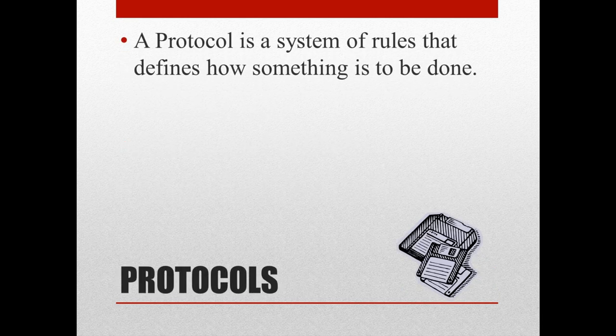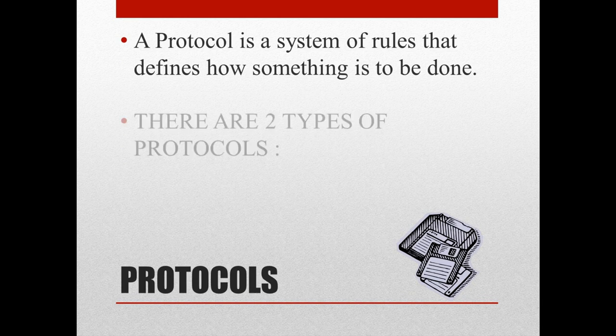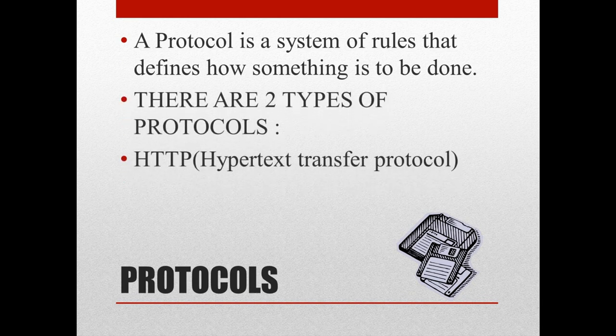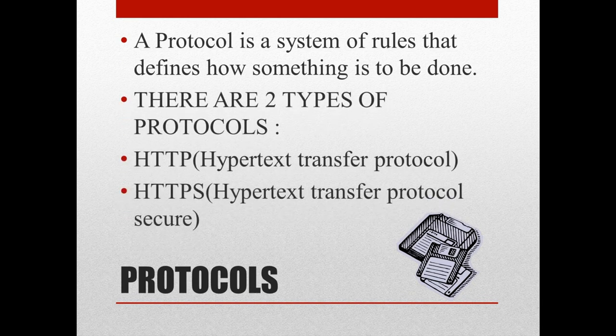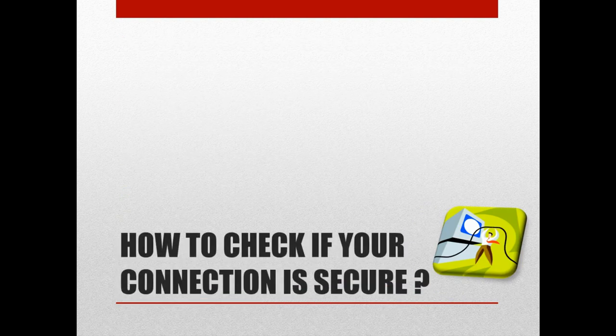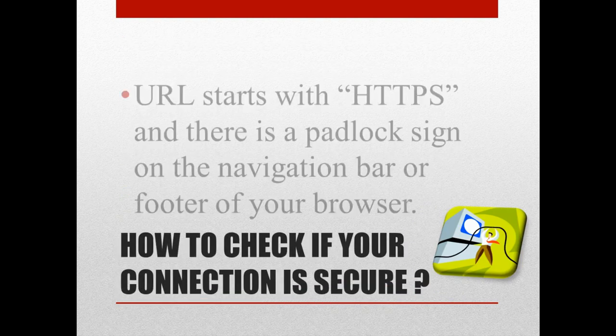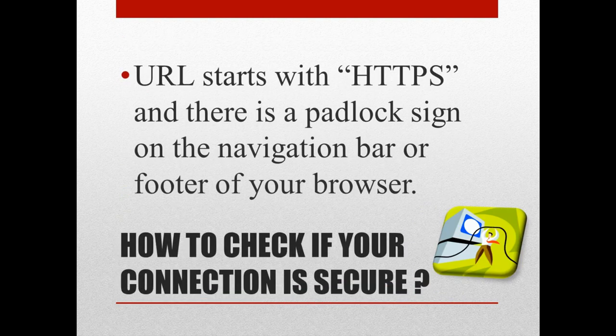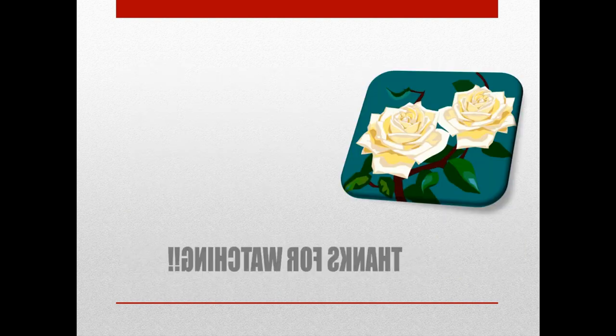Protocols — a protocol is a system of rules that defines how something is to be done. There are two types of protocols: HTTP and HTTPS. To check if your connection is secure, the URL should start with HTTPS and there should be a padlock sign on the navigation bar.